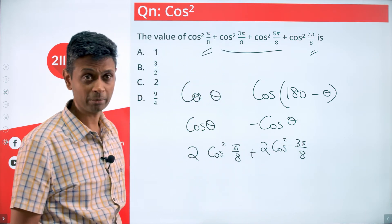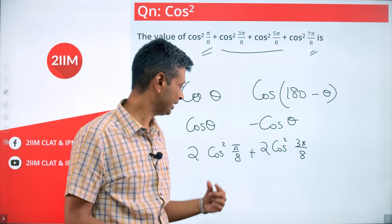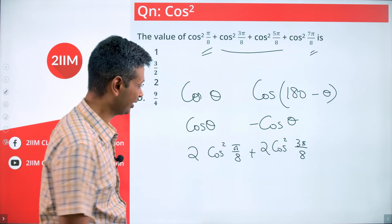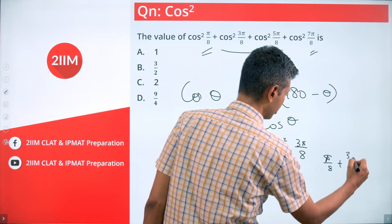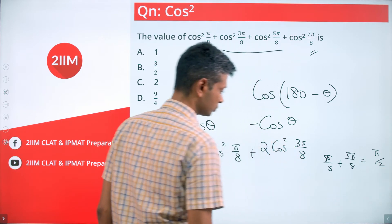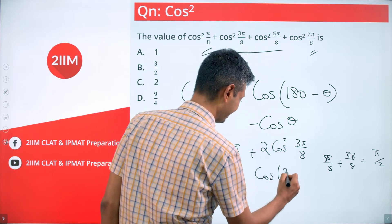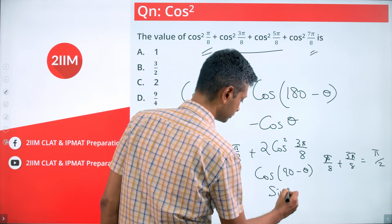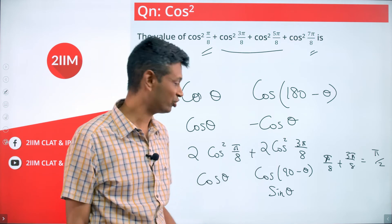Now we need to link cos²(π/8) and cos²(3π/8). Notice that π/8 + 3π/8 = 4π/8 = π/2. Using the identity cos(90° − θ) = sin(θ), we get cos(3π/8) = sin(π/8).